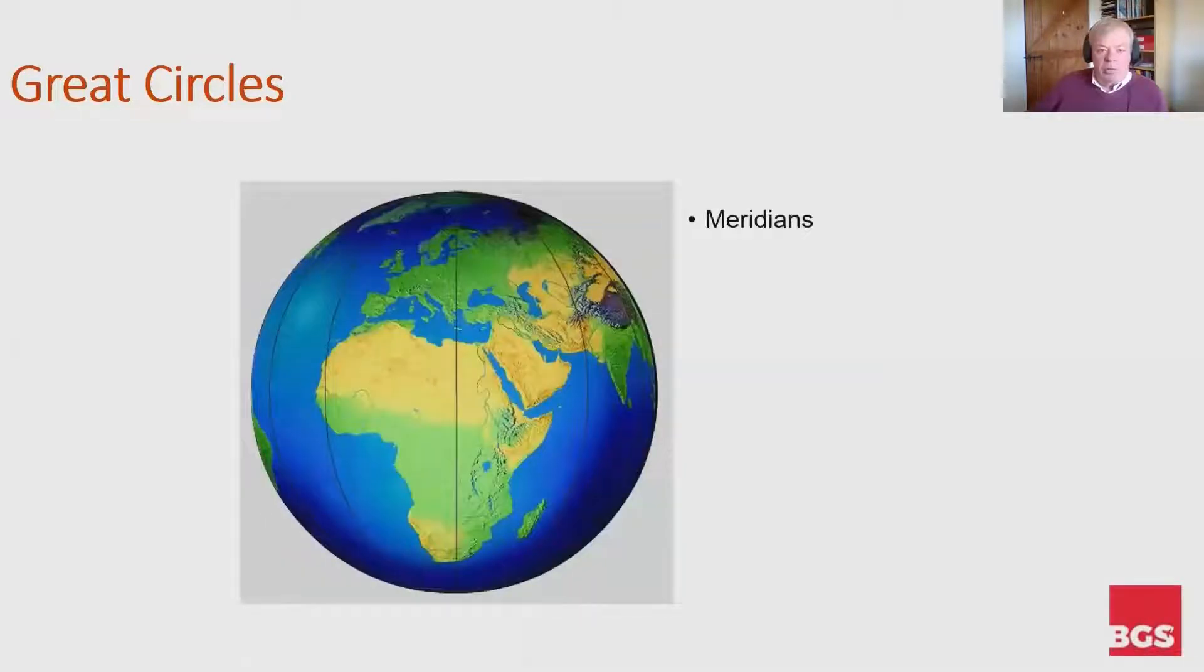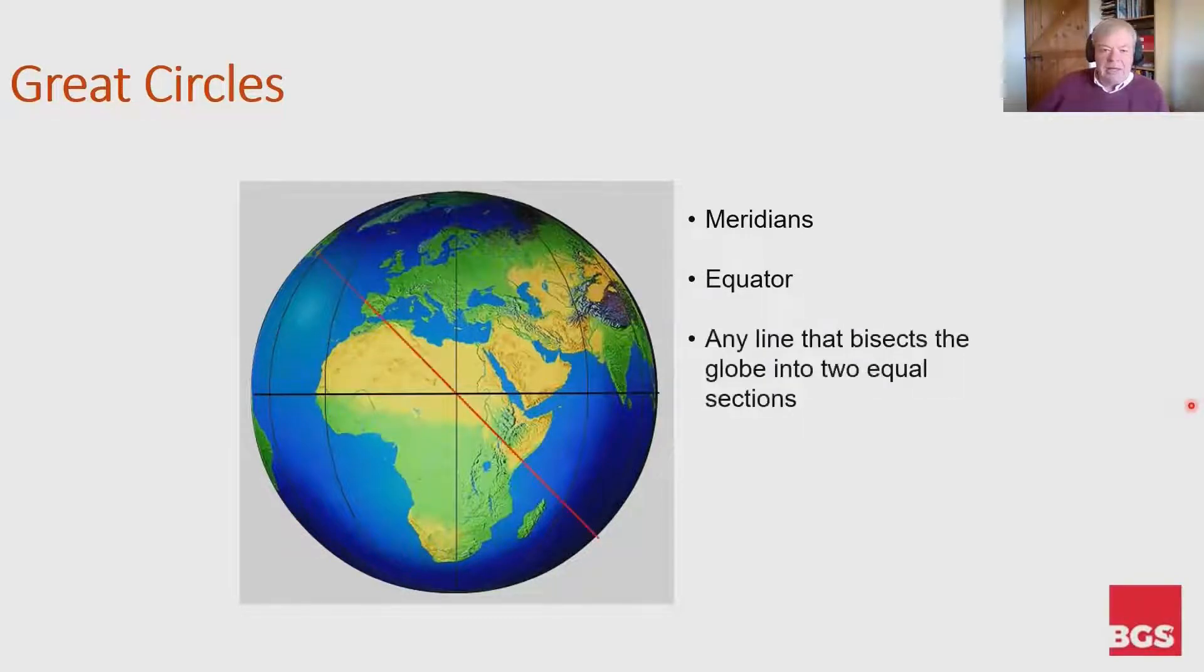What are the great circles that we know about? Meridians and their anti-meridian together is a complete great circle. Any two points on a meridian is a great circle track between those two points. The equator is a great circle, and any line that bisects the globe into two equal sections.